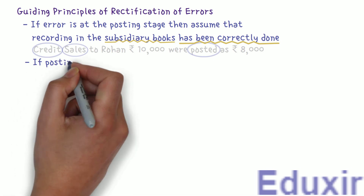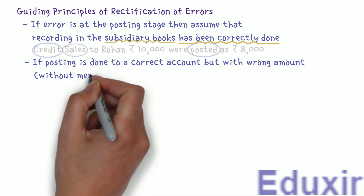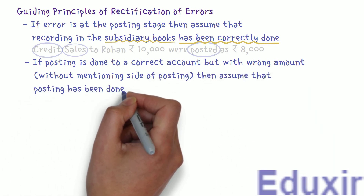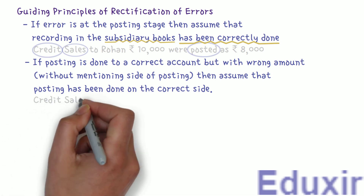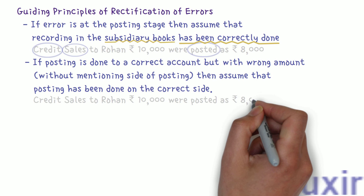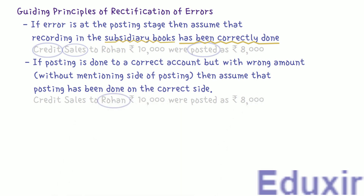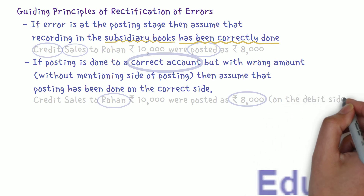The other guiding principle is: if the posting is done to a correct account but with the wrong amount, without mentioning the side of posting, then assume that the posting has been done on the correct side. Using the same example — credit sales to Rohan, 10,000 rupees were posted as 8,000 rupees — as the sale is on credit to Rohan, Rohan becomes the debtor and his account should be debited. The posting is to the correct account but with 8,000 rupees instead of 10,000 rupees. Since the side is not mentioned, we assume the wrong amount is posted on the correct side, which is the debit side.